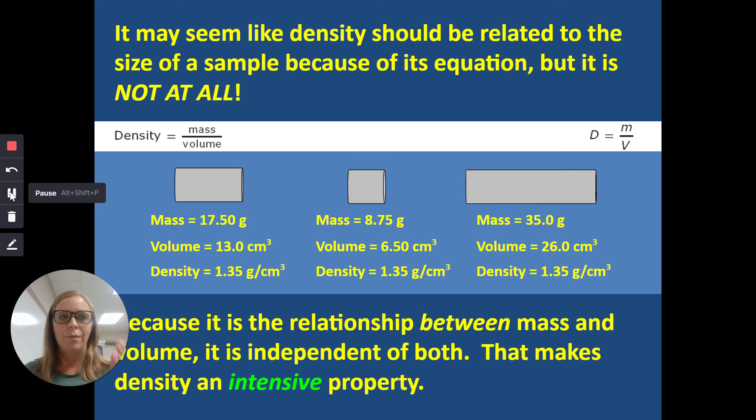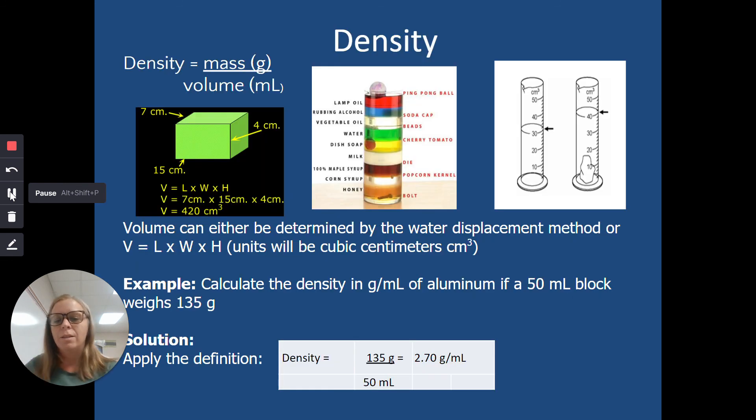When you calculate density, it's always mass divided by volume. So if you have a hundred milliliters of water and you have a hundred grams of water, a hundred grams divided by a hundred milliliters is going to be one. Any object's density is going to be its density. It has nothing to do with the size of it. It's internal, it's always going to stay the same.